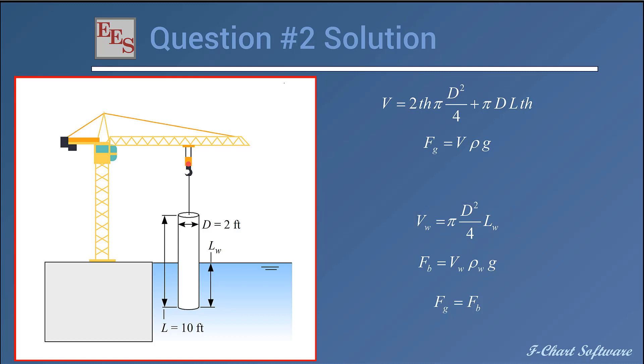This is one equation in two unknowns, so I'm going to hold off. I'm going to enter it into EES. The force of buoyancy is the volume of displaced water times the density of water times gravity. Here I've added another equation, but I've added another unknown, so again I think I'll hold off until I add one more equation.